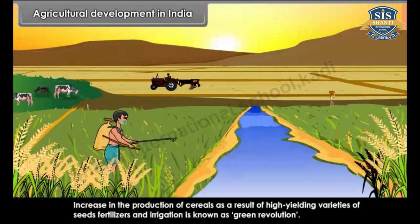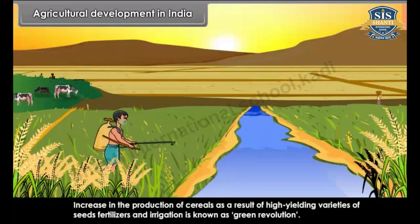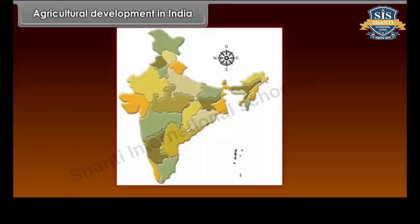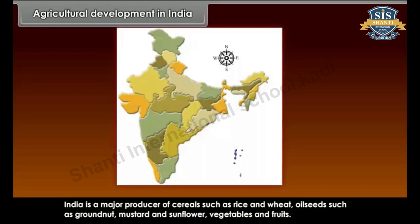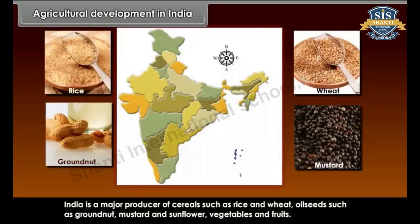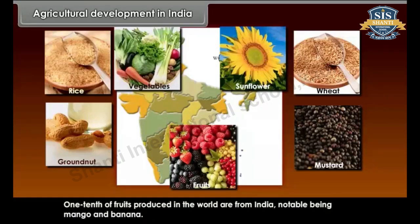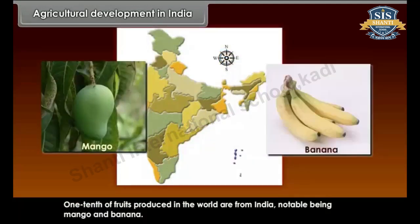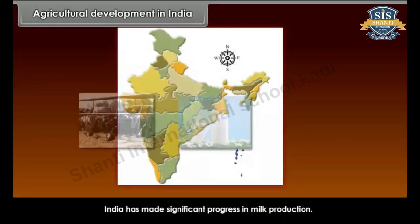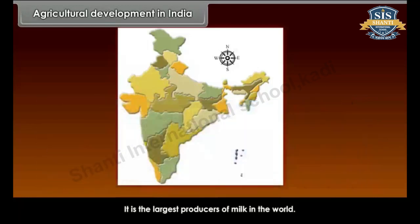The increase in the production of cereals as a result of high yielding varieties of seeds, fertilizers and irrigation is known as the Green Revolution. India is a major producer of cereals such as rice and wheat, oil seeds such as groundnut, mustard and sunflower, vegetables and fruits. One tenth of fruits produced in the world are from India, notable being mango and banana. India has made significant progress in milk production and is the largest producer of milk in the world.